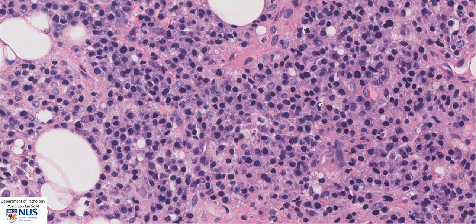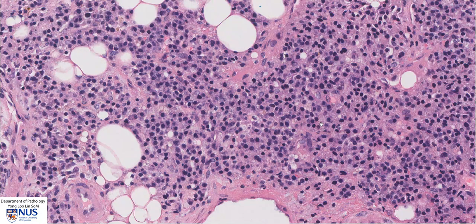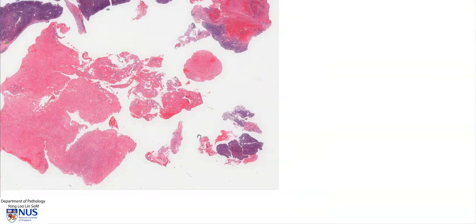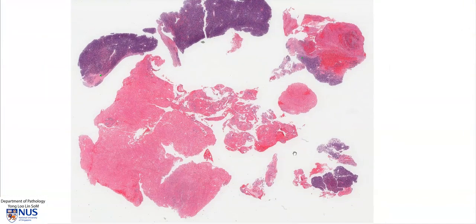However, this is not always present in all patients. In summary, this is an example of a case of plasma cell myeloma or multiple myeloma, which is the presence of multiple clonal proliferations of abnormal plasma cells within the bone marrow, and it is part of the spectrum of plasma cell neoplasms. Thank you.